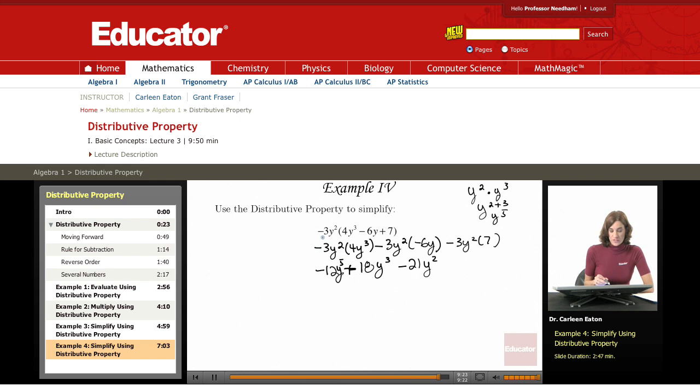Again, what I did is I took negative 3y squared times 4y cubed, and that gave me negative 12y to the 5th plus 18y cubed minus 21y squared.